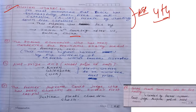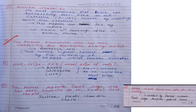Thirteenth current affair: Indian economist Amartya Sen was conferred the prestigious Bodley Medal, awarded by the Oxford Bodleian Library — one of the world's most famous libraries.